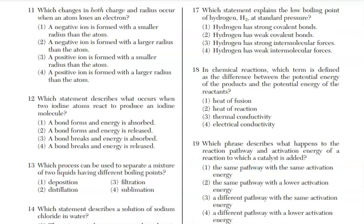Question 11, which changes in both charge and radius occur when an atom loses an electron? We're talking losing here, not gaining. So if an atom loses electrons, that's typically your metals. Your metals, if they're losing a negative charge, become positive. So let's get rid of choices 1 and 2. And if they're losing an electron, the atom becoming an ion is smaller. That is choice 3.